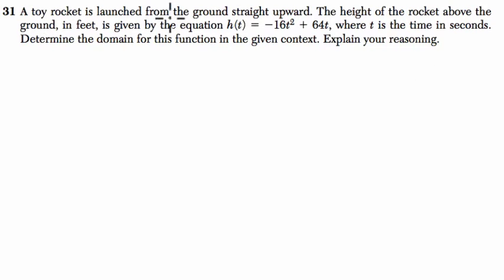Alright, so let's read the problem. A toy rocket is launched from the ground straight upward and the height of the rocket above the ground in feet is given by this equation: h(t) = -16t² + 64t, where t is the time. Determine the domain for this function.